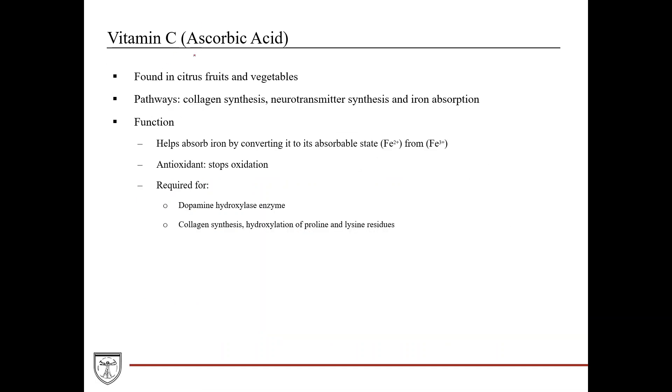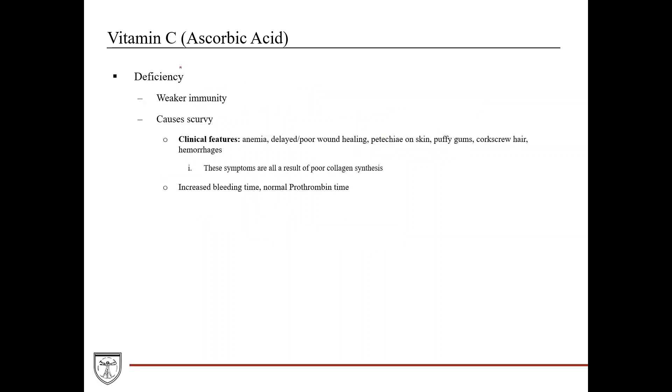Vitamin C, also known as ascorbic acid, is found in citrus fruits and vegetables. Pathways it's involved in include collagen synthesis, neurotransmitter synthesis, and iron absorption. It helps absorb iron by converting it into its absorbable state, the ferrous state or Fe2+, converting it from the ferric state. It acts as an antioxidant. It's required for dopamine hydroxylase enzyme, and in collagen synthesis, it's specifically required for hydroxylation of proline and lysine residues.